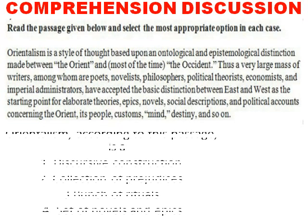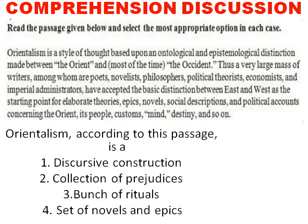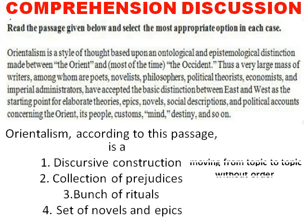Next question: Orientalism according to this passage is — a discursive construction, a collection of prejudices, a bunch of rituals, or a set of novels and epics. Option four says only a set of novels and epics — when you see so many topics involved, you can cut that. Option three — bunch of rituals — is also not a single defining thing. Option two — collection of prejudices — yes, but there are many other subjects included. That is what we call discursive construction: moving from topic to topic without any order. Many topics can be defined by Orientalism with no chronological order. That is why option one — discursive construction — is the most suitable answer.